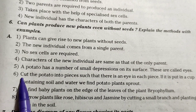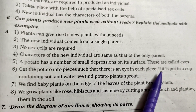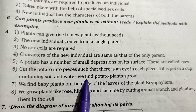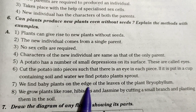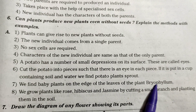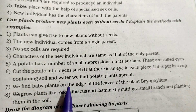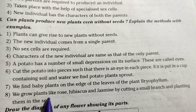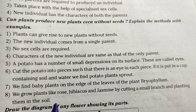A potato has a number of small depressions on its surface called eyes. Cut the potato into pieces such that there is an eye in each piece; if put in soil with water, potato plants sprout. We find baby plants on the edges of the leaves of bryophyllum. We can grow plants like rose, hibiscus, and jasmine by cutting a small branch and planting them in soil.